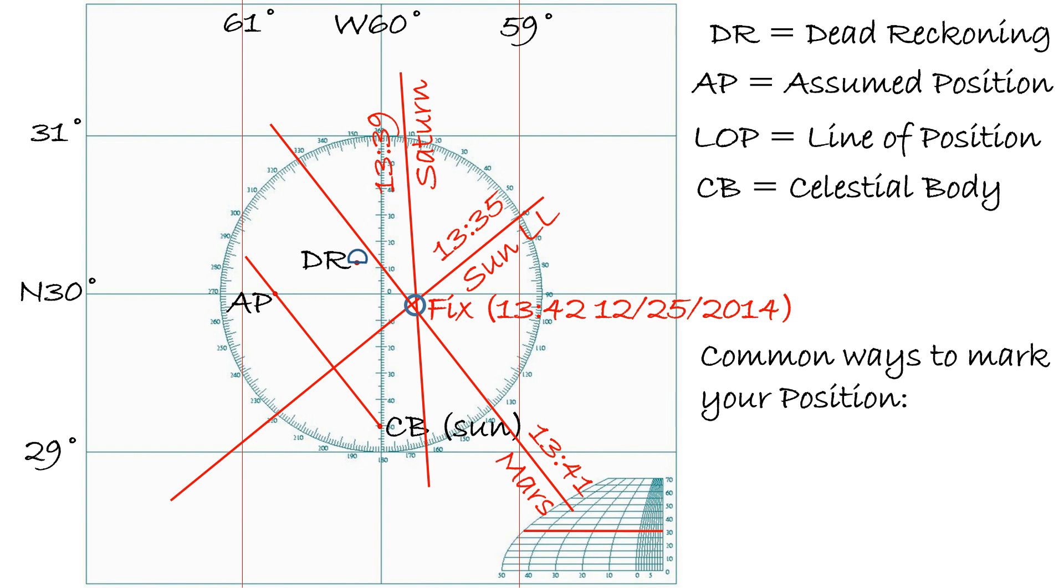The US Navy, for example, uses the following guidelines. If no more than two lines of position were used, then this is called an estimated position, or EP, and is marked with a square. A circle is used for three or more lines of position, and is called a FIX. A triangle is used if the position was obtained electronically, such as with a GPS.